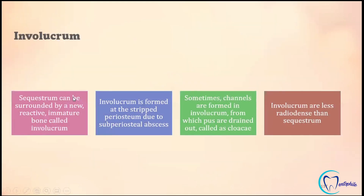Involucrum. Sequestrum can be surrounded by a new reactive immature bone known as the involucrum. It is formed at the stripped periosteum due to the subperiosteal abscess. Sometimes channels are formed in the involucrum from which pus is drained out, known as the cloacae, and involucrum is less radio-dense than the sequestrum.